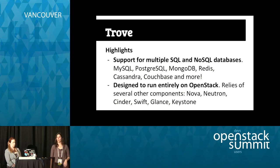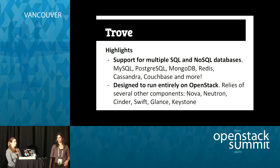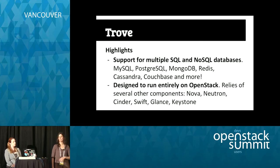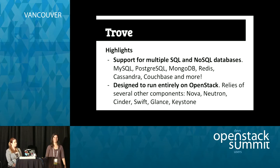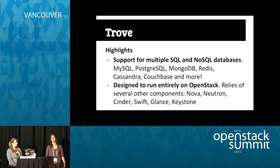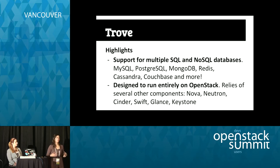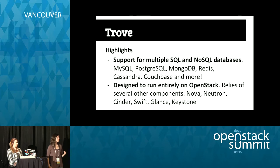Some highlights about Trove: currently it has support for many relational and non-relational databases — MySQL, PostgreSQL, MongoDB, Redis, Cassandra, Couchbase, CouchDB, Vertica, DB2, and probably more because it has grown a lot lately. Another important thing is that Trove has been designed to run entirely in OpenStack. Since its beginning, Trove developers focused on not reinventing the wheel — they rely on OpenStack projects to do everything needed to provide their data store with other OpenStack components.